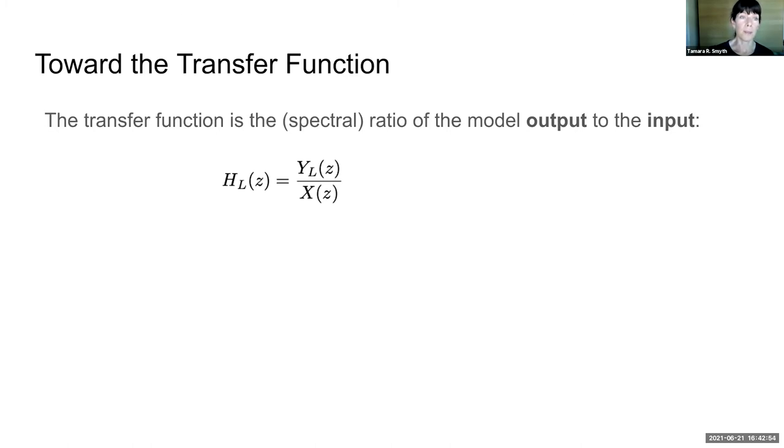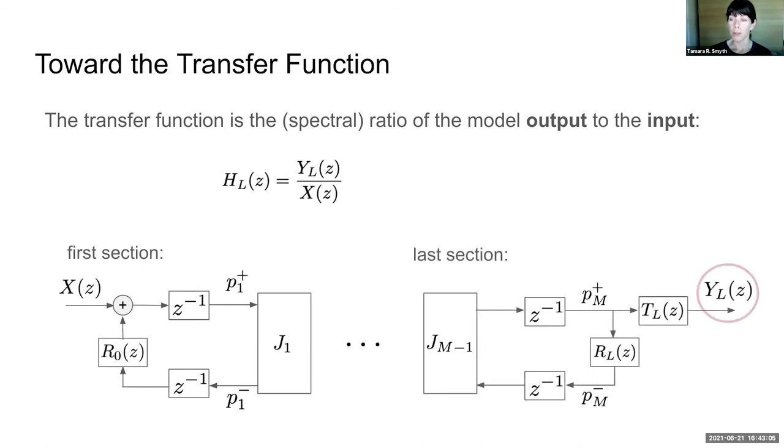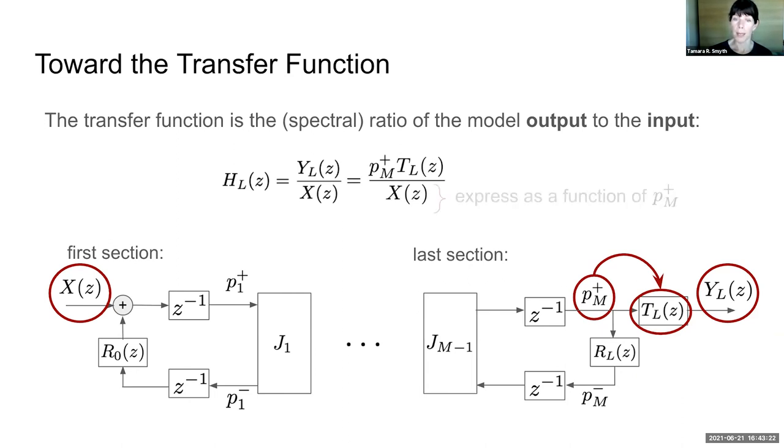This helps us develop the transfer function for the vocal tract, which is defined as the spectral ratio of the model output to the input. Consider the last section to obtain the output, the first section to get the input. The output is given by the right traveling wave in the last section, having gone through the transmission filter. And we would like also to express the input X as a function of that same wave component.